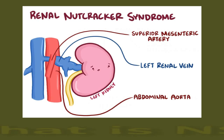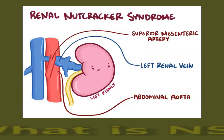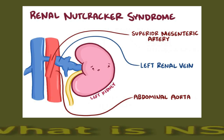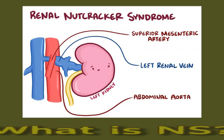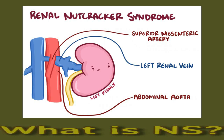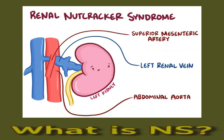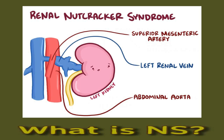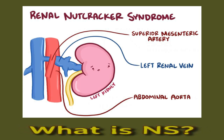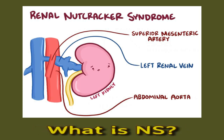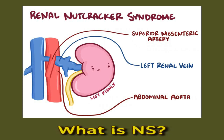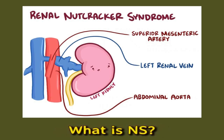The kidneys are two bean-shaped organs located on either side of the lower spine. They are responsible for removing waste from the blood. Each kidney has a renal vein that carries filtered blood into the circulatory system. The left renal vein carries blood from the left kidney to a large vein called the inferior vena cava, or IVC, which receives deoxygenated blood from the lower body and delivers it to the heart.